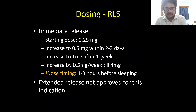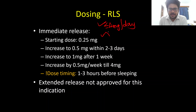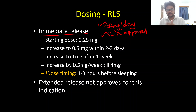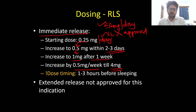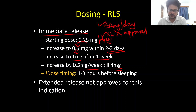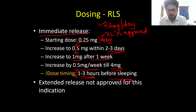For restless leg syndrome, the maximum dose is 4 mg per day, and only the immediate release formulation is approved — not the extended release. The starting dose is 0.25 mg per day once daily. We increase this to 0.5 mg over the next two to three days, then increase to 1 mg after one week, and further increase by 0.5 mg per week until we reach the maximum dose of 4 mg or the desired clinical effect. An important point is dose timing — since restless leg syndrome predominantly occurs during rest and sleep, the medication must be given one to three hours before bedtime.